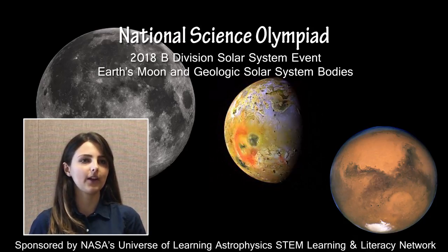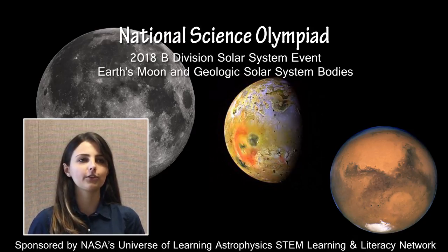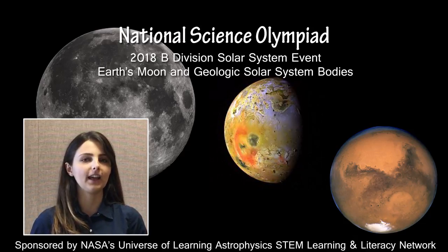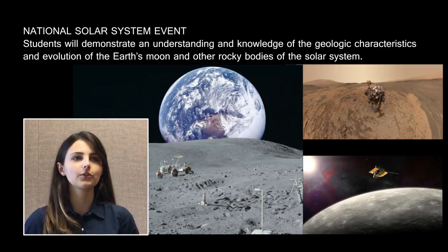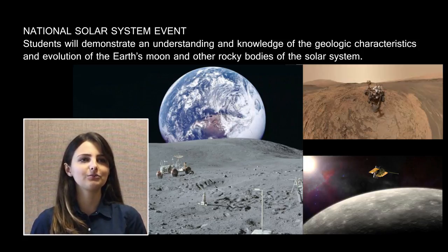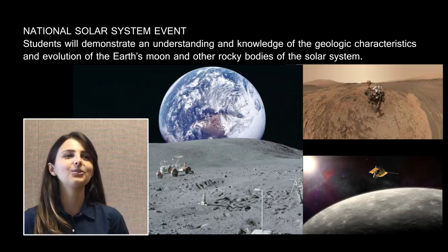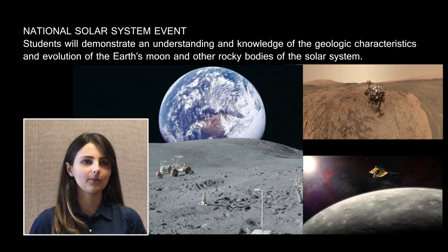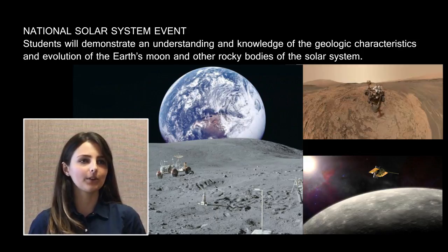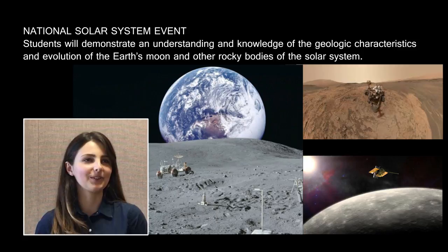The recommended resources for this event will be discussed at the end of the presentation. The webinar, transcript, and accompanying PowerPoint presentation will be posted and available for download on the NSO website. This is the first year for the solar system in the B Division astronomy event rotation. In 2017, the B Division astronomy event was Reach for the Stars. The focus of this year's solar system event is Earth's moon and other rocky bodies of the solar system.